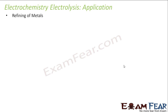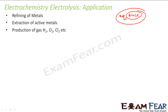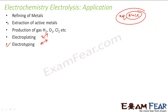Applications of electrolysis include: refining of metals, extraction of active metals like sodium, production of gases such as hydrogen, oxygen, and chlorine — for example, electrolysis of NaCl aqueous solution produces chlorine gas. It is also used for electroplating of metals and for electrotyping to replicate old monuments quickly.